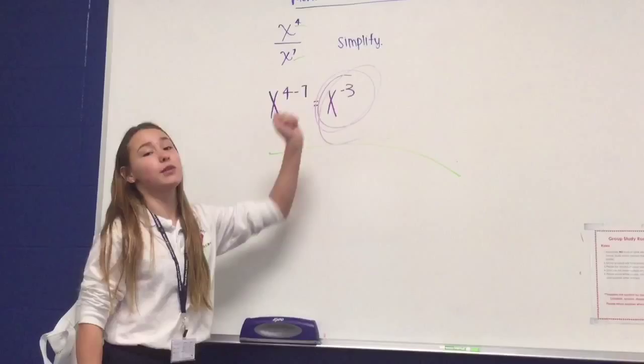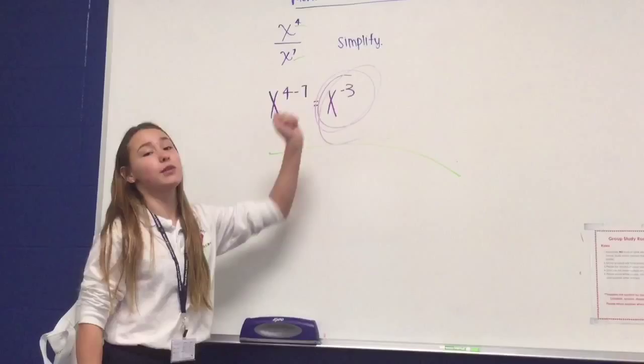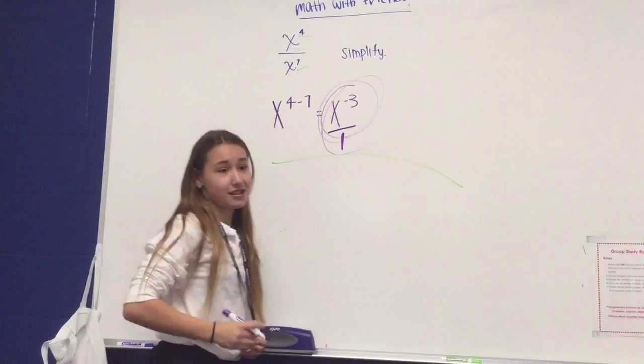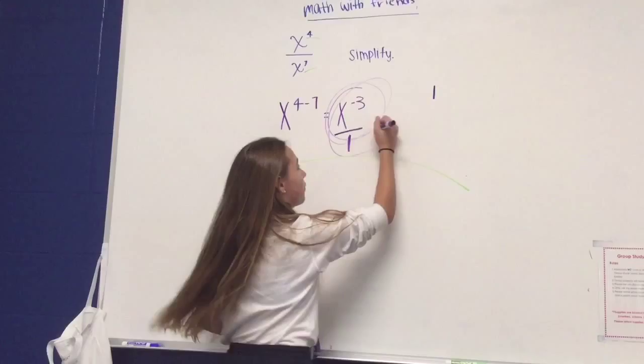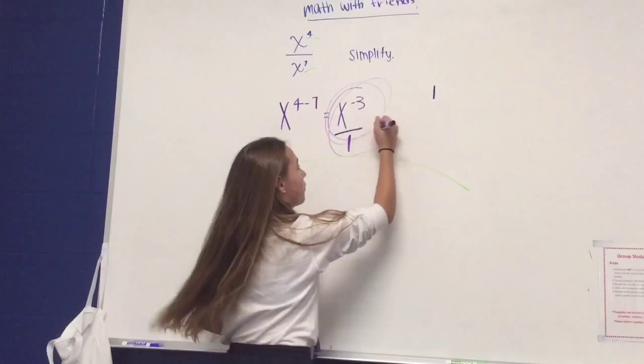What you would do, since you have this, you would automatically put it... This is on the top of your fraction. So, what you would do is you want to flip and make it positive. So, you would flip one and put your x on the bottom, and that would make your exponent positive. Here we go.